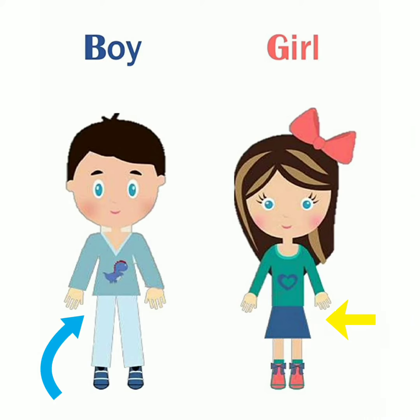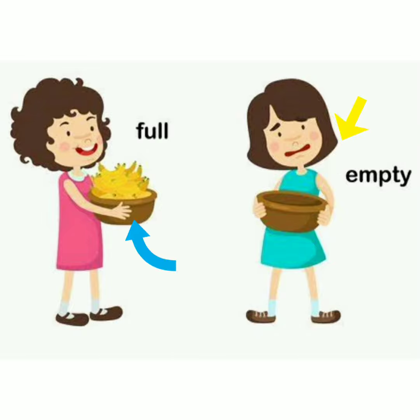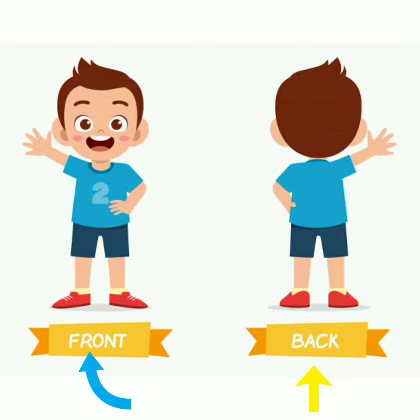Next, full, empty — yani bhara hua or khali. Next, front, back — tab saamne, piche.